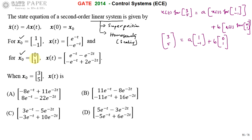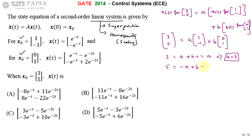Since simply adding x_naught values gives [1, 0], which is not [3, 5], we need the coefficients. So: 3 = a times 1 + b times 0 = a, giving a = 3. For the second component: 5 = -a + b, so b = 5 + a = 5 + 3 = 8. Therefore a = 3 and b = 8.